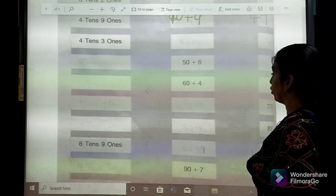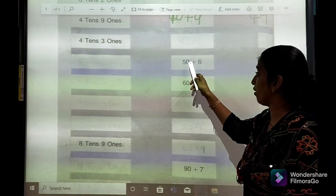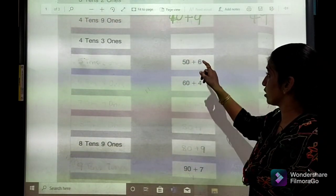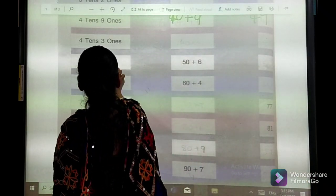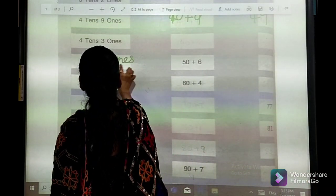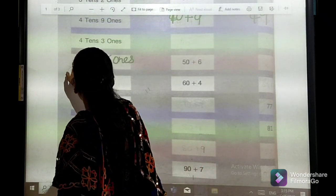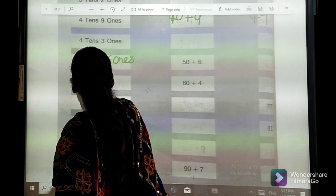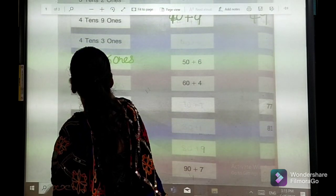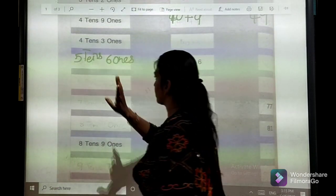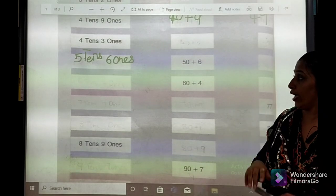One more example we will do. Here is the case of 50 plus 6. So 6 is at the case of 1s, so we will write 6, 1s, and 5 is at the case of 10s, so it is 50. So we will write 5 tens. Here, plus sign, it will be a case of 10s.